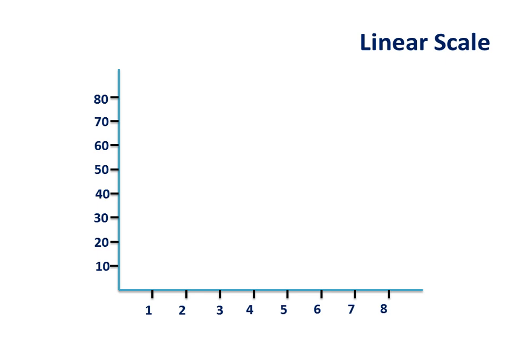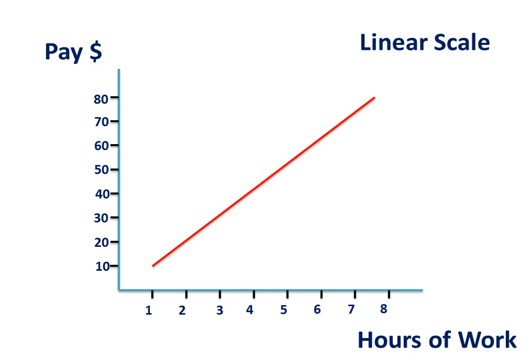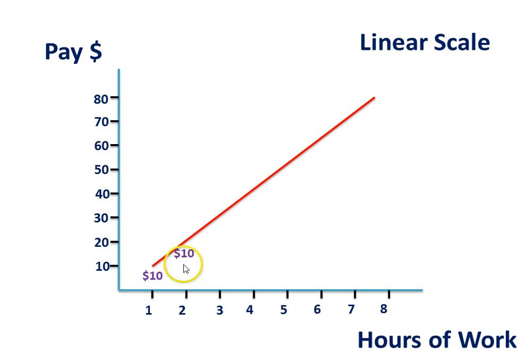To explore some of the issues with using this type of graph, we're going to use an example of how much someone was paid for their hours of work. Conventionally we may see a line like this: in their first hour of work they'll earn $10, in their second hour a total of $20 because they've earned 10 more dollars, in the next hour another 10 giving a total of 30, and so on.